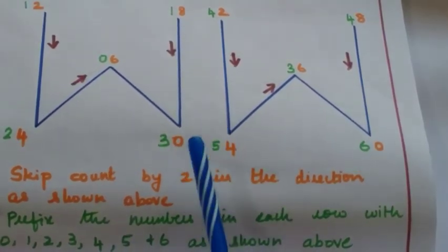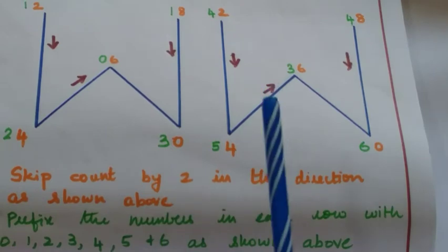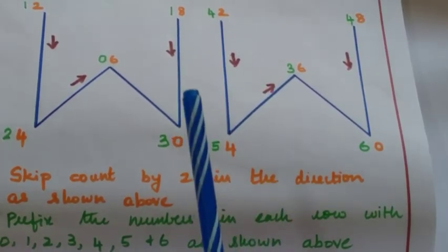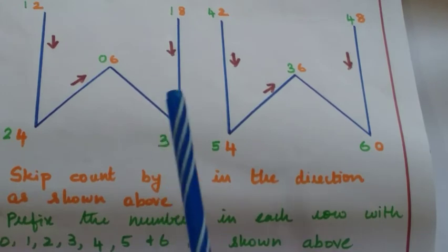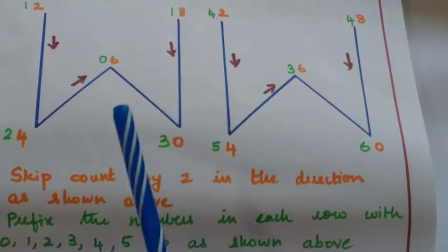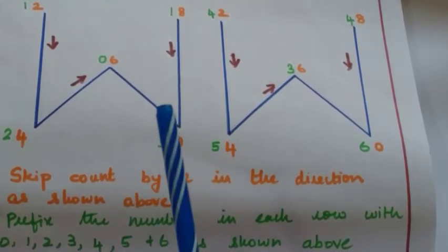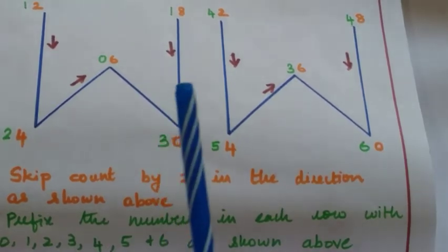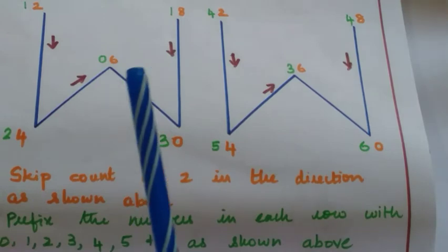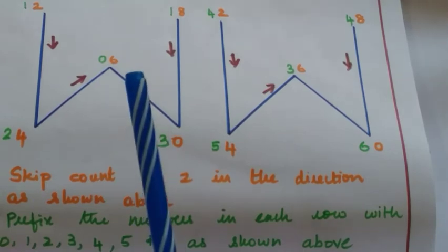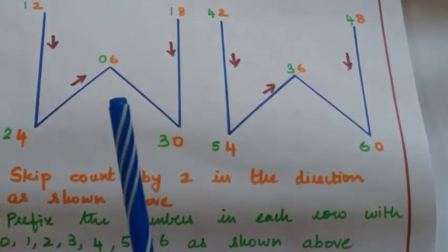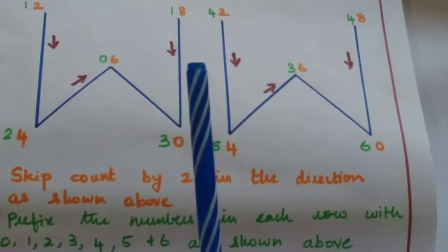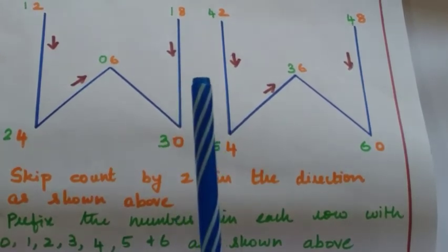However, this W trick is not going to help your kid memorize the table — they can only write it sequentially. Our main aim is to make kids memorize the table, so I will explain each row of table 6 and the trick to memorize it. But first, let's observe a few patterns in the results of table 6.